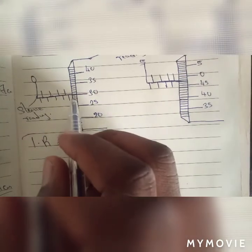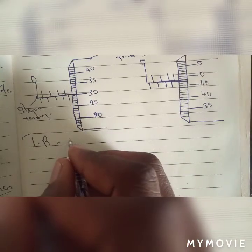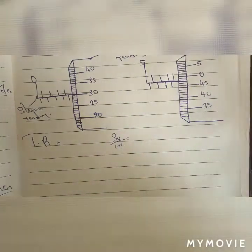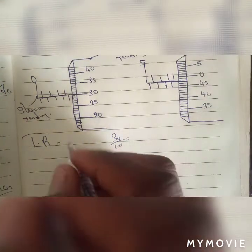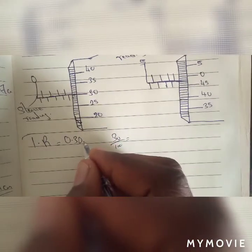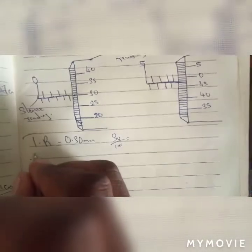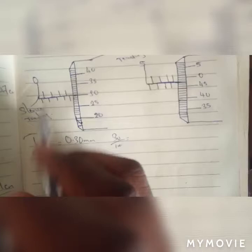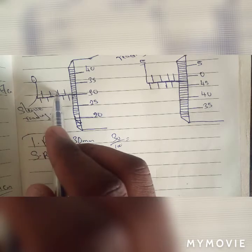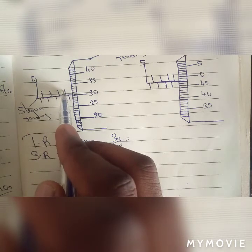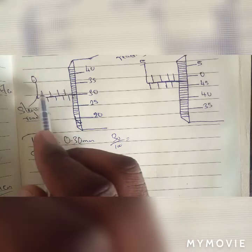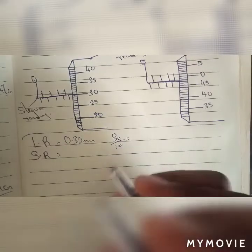Remember: the sleeve reading and the thimble reading — it is the point where they meet that gives the thimble reading. The thimble reading is at 30. So 30 divided by 100 gives 0.30 millimeters. Now for the sleeve reading: here is zero, one, two, three, four — so the sleeve reading is four. Don't divide anything — put it down as four point zero zero millimeters.